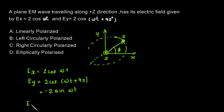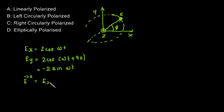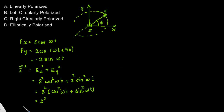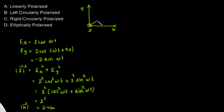Now we look for the resultant: |E|² = Ex² + Ey² = 4cos²(ωt) + 4sin²(ωt) = 4(cos²(ωt) + sin²(ωt)) = 4. So the electric field magnitude is constant at 2 V/m. The magnitude is fixed at 2 volts per meter, meaning the tip of the electric field moves at a constant distance from the origin.